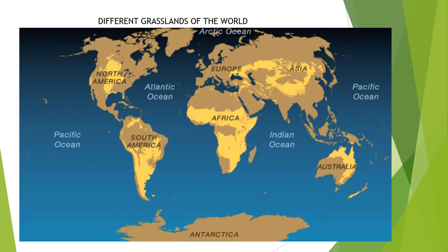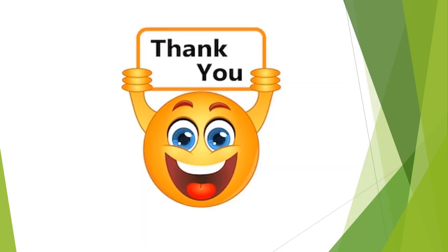Students, now have a look at this map. This map is very important. The highlighted parts on this map are the areas where the grasslands are situated. Grasslands occur naturally in all continents except Antarctica. Please go through this map carefully. So students, that's all for today. Thank you.